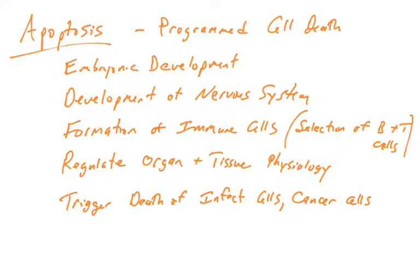Hi there. This is the first in a series of videos on apoptosis, or programmed cell death. Apoptosis is a process that occurs normally and naturally in organisms to remove unwanted cells.